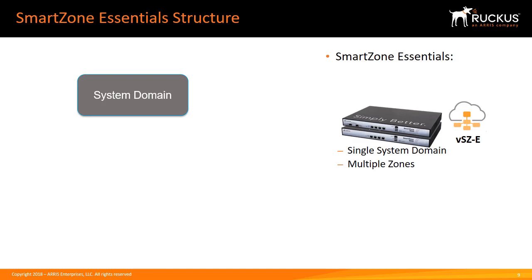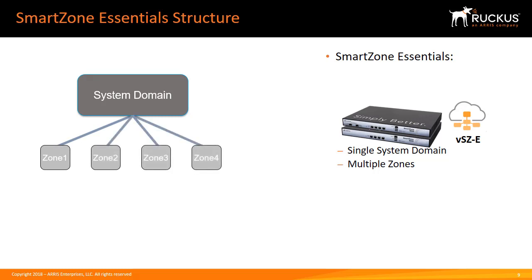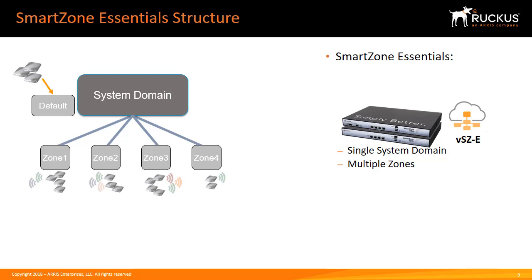SmartZone Essentials is based on a single system domain. As domains represent administration boundaries, there is a single point of administration, though you can add additional administrators with customized rights. To be clear, you cannot create sub-domains or partner domains. You can, however, create multiple zones, which determine the configuration and behavior of the access points that are members of them. When access points first register to the controller, by default they will join the default access point group in the system domain, and can then be moved to target zones where they will adopt the zone configuration settings.